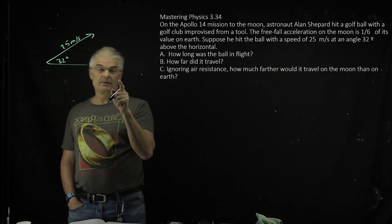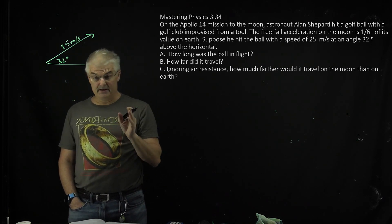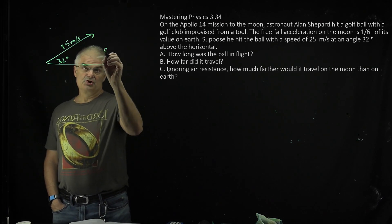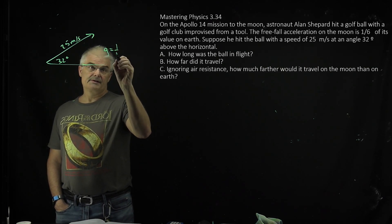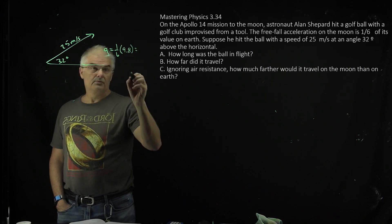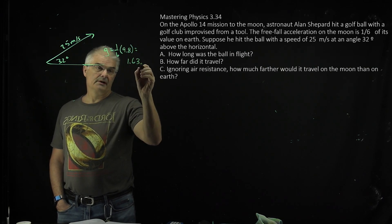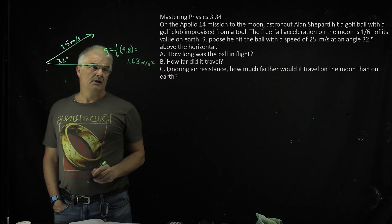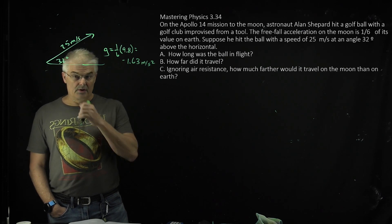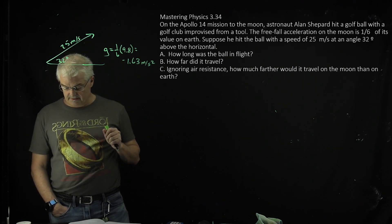Now note that the acceleration of gravity is not 9.8 anymore because we are on the moon, and it is one-sixth of that amount. And so g, if you will, is going to be one-sixth of 9.8, which comes out to 1.63 meters per second squared. So that's going to be an important number, technically negative, because that's how we would do this. And so the question asks, how long was the ball in flight?